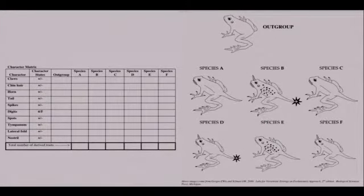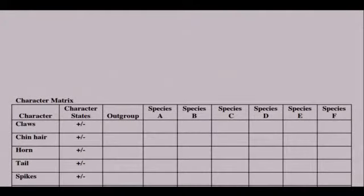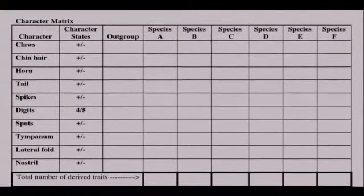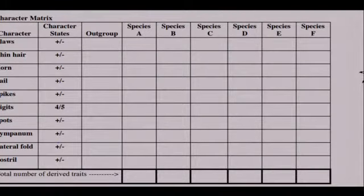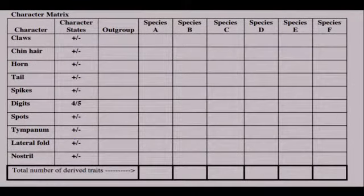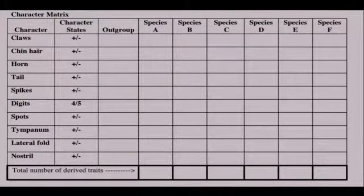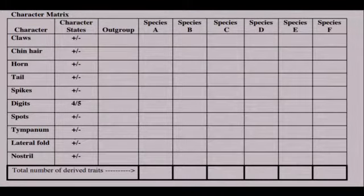We're going to use their character matrix here. They already built a character matrix. It looks like this where you would have your taxa across the top - A, B, C, D, E, F, and the outgroup. Then they've chosen some characters: claws, chin hair, horn, tail, spikes, digits, spots, tympanum, lateral fold, nostril.